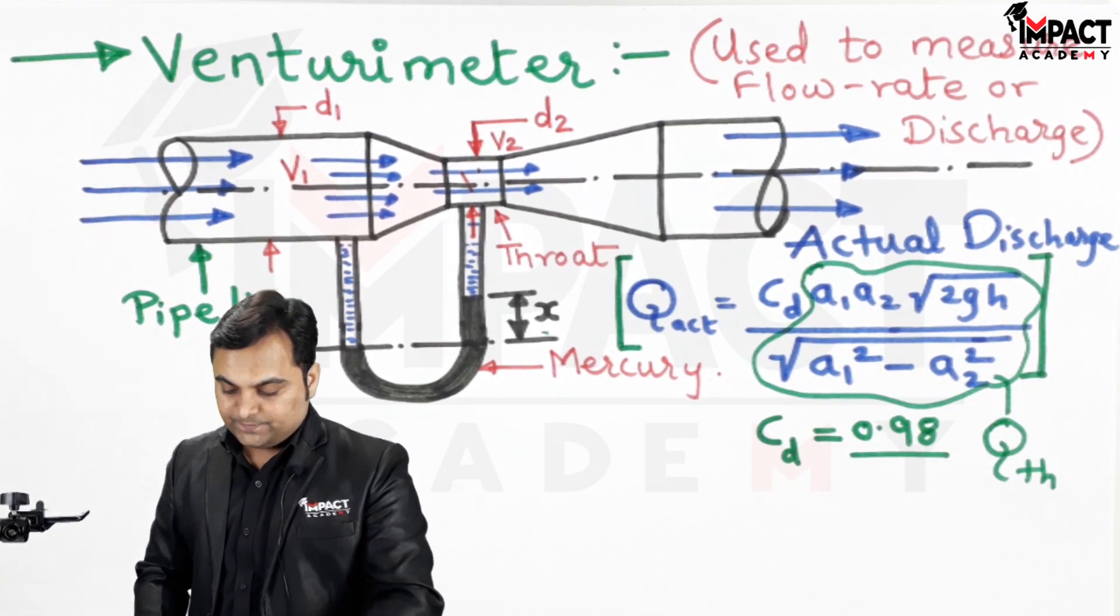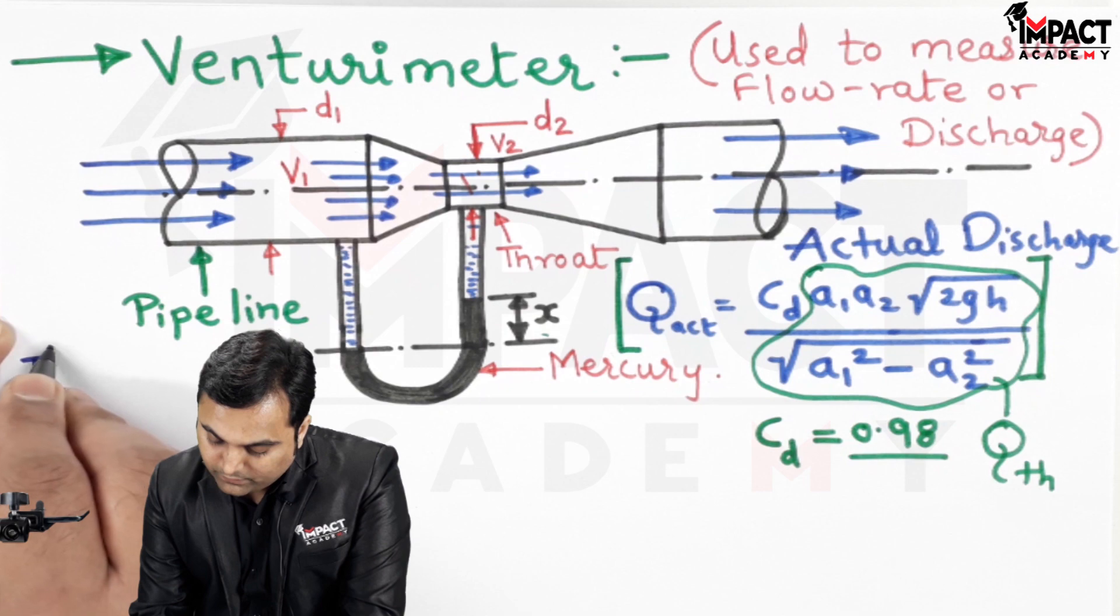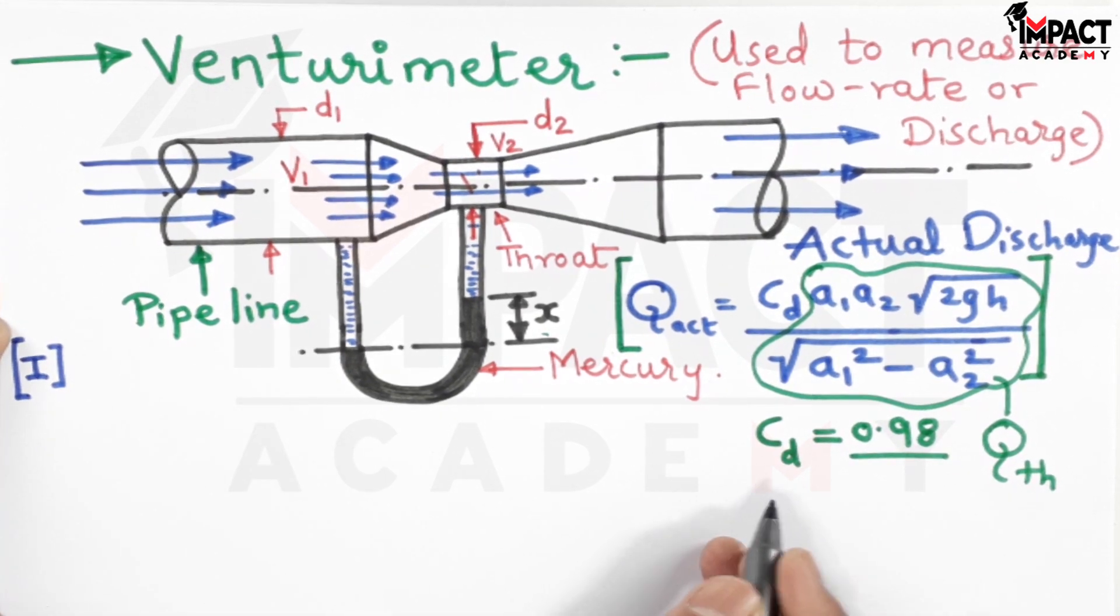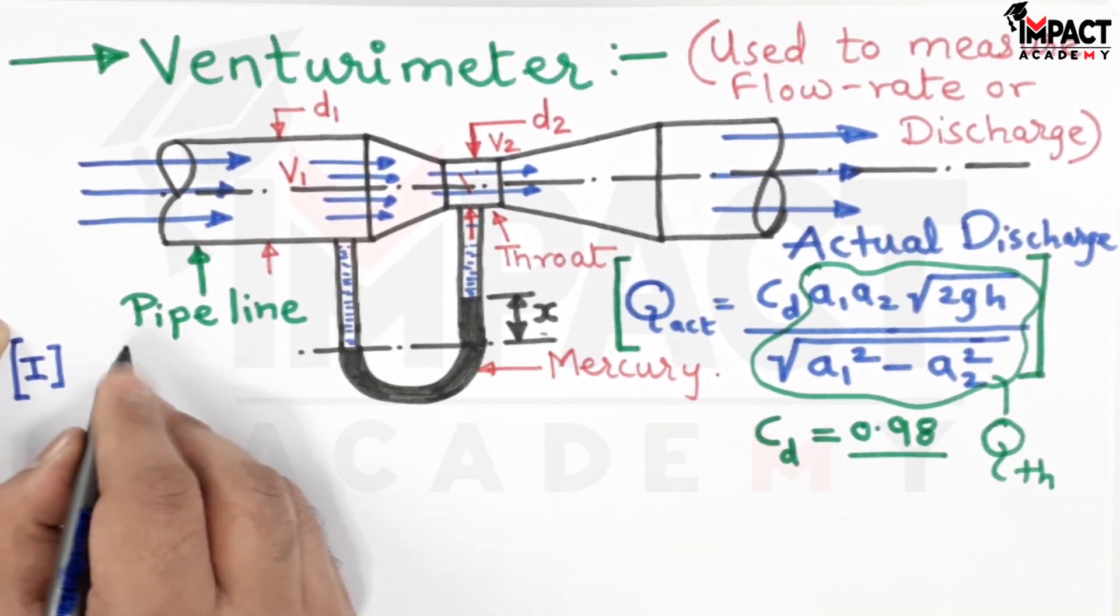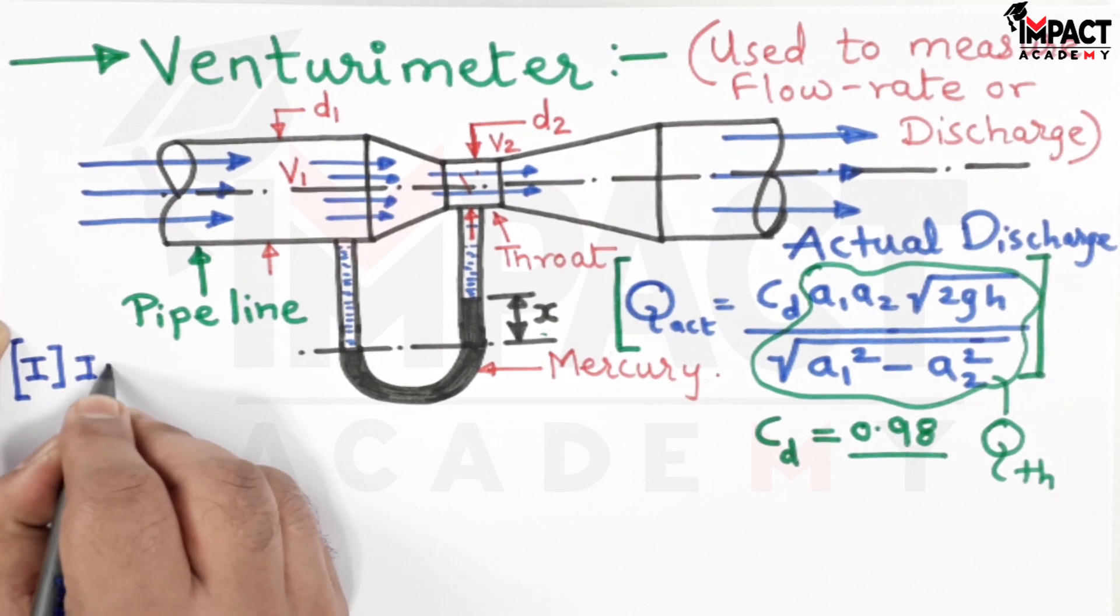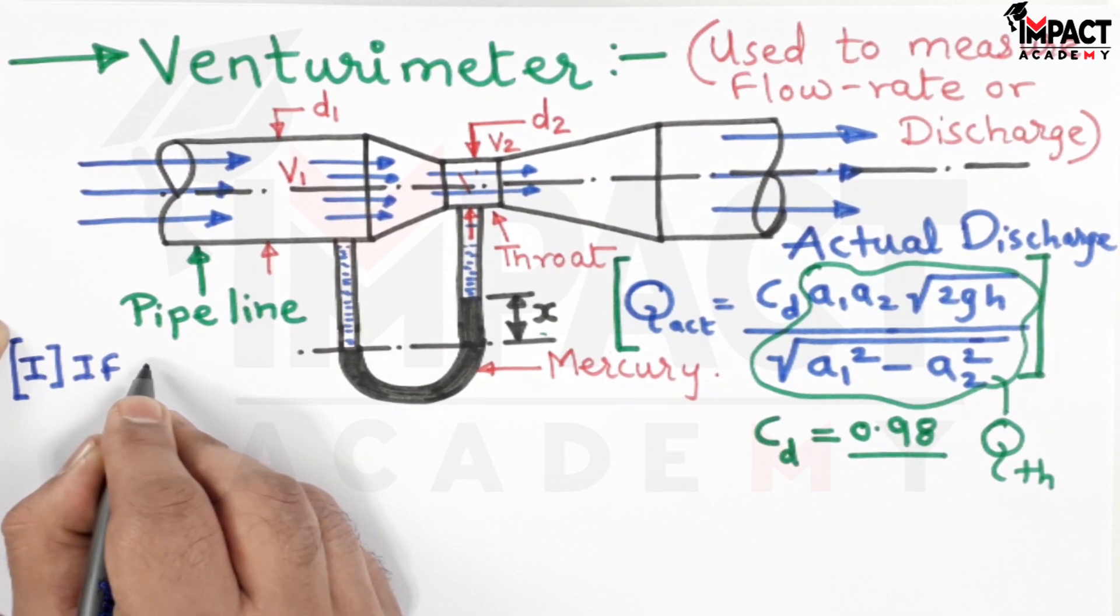I will explain how to get this H. For that there are two cases, like for example if in the manometer mercury is used.